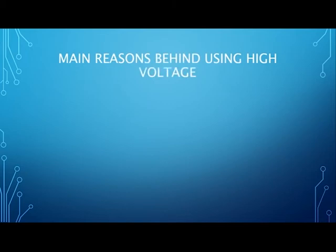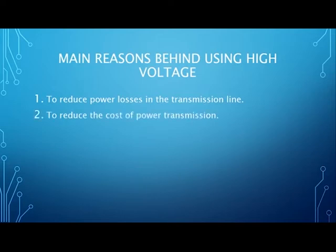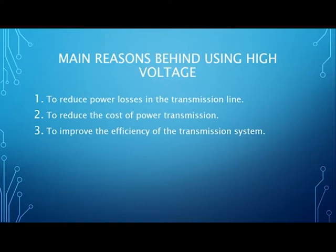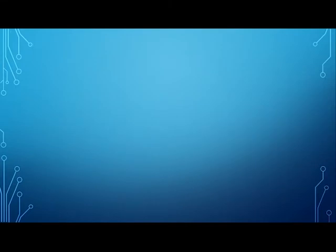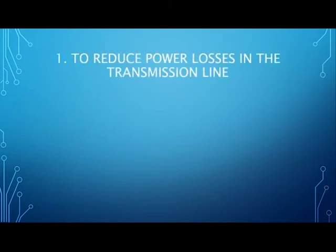Here are the main reasons behind using high voltages: number one, to reduce power losses in the transmission line; number two, to reduce the cost of power transmission; number three, to improve the efficiency of the transmission system. Now we will explain each of these reasons in a little detail, starting with the reduction of power losses in the transmission line.